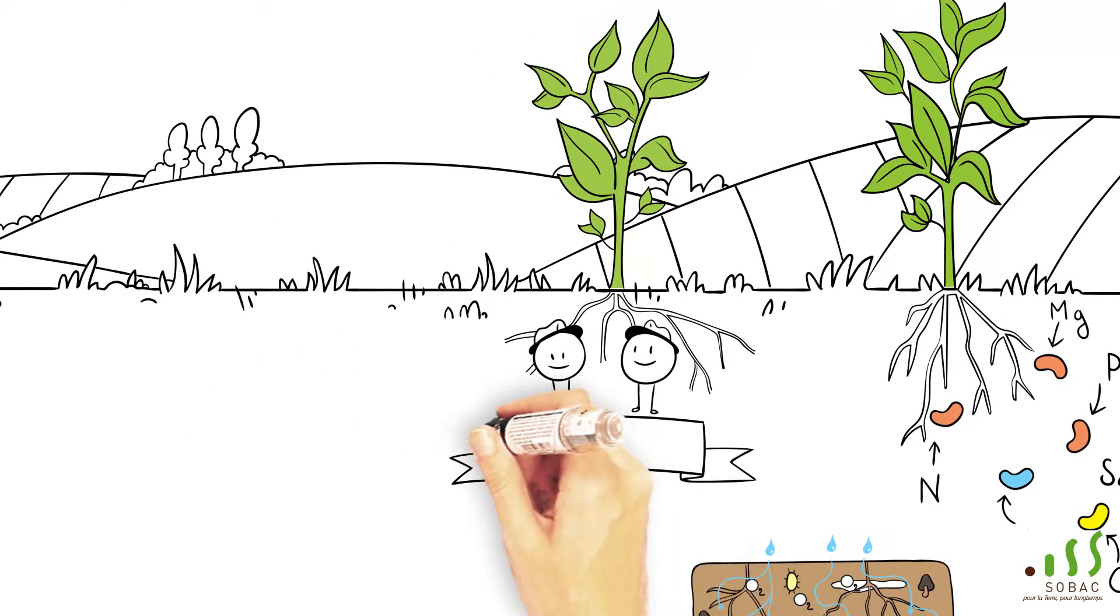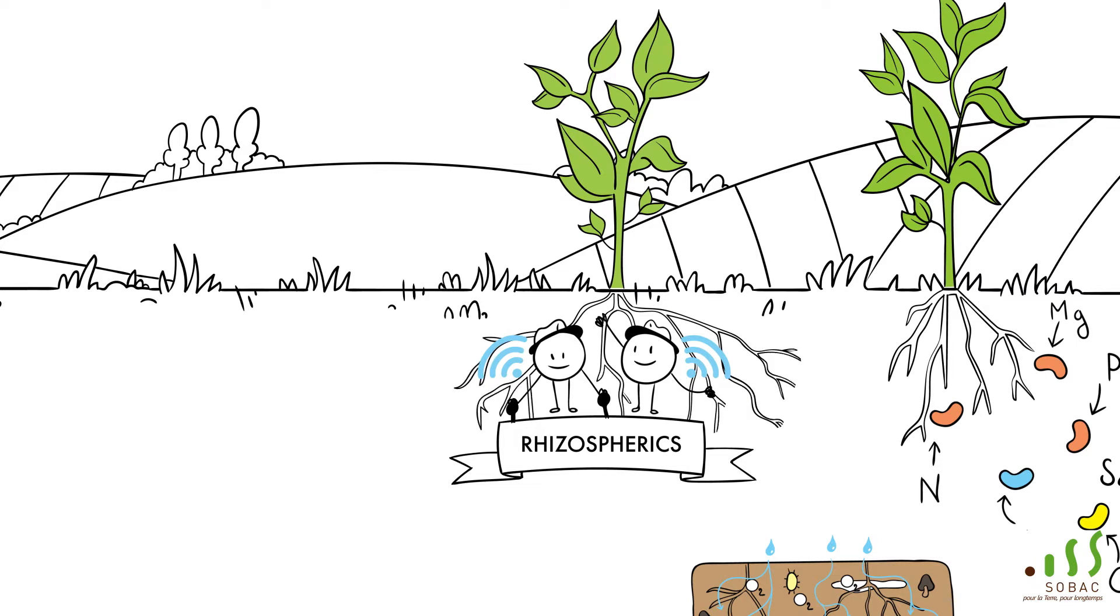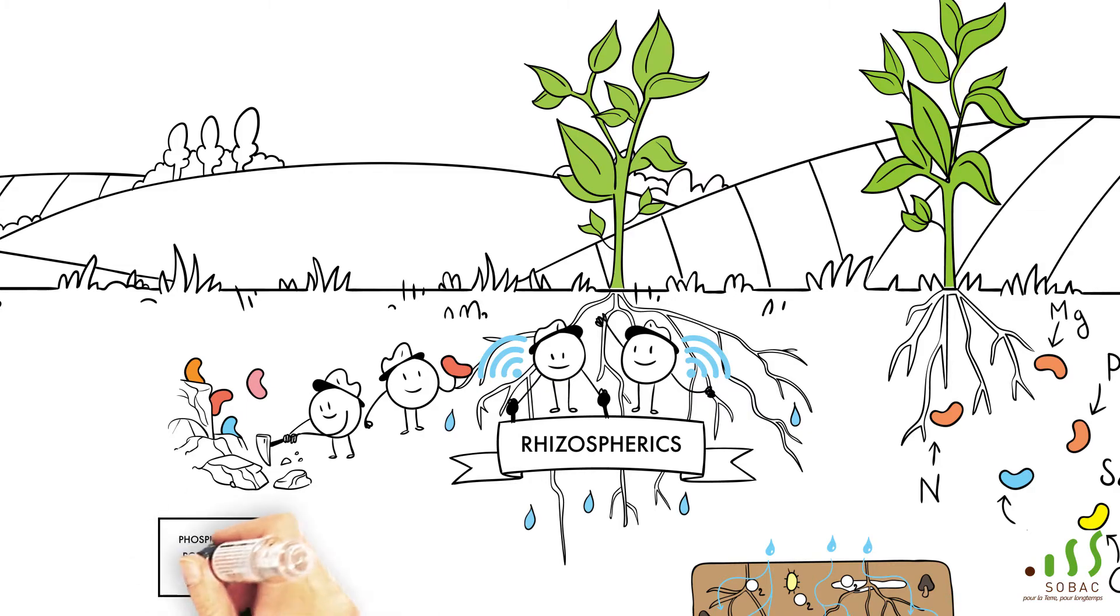The rhizospheric microorganisms communicate with the roots to increase their prospecting area and allow the plant to be fed regularly with water and nutrients. They make mineral elements such as phosphorus, potassium, and other trace elements available for the plant.